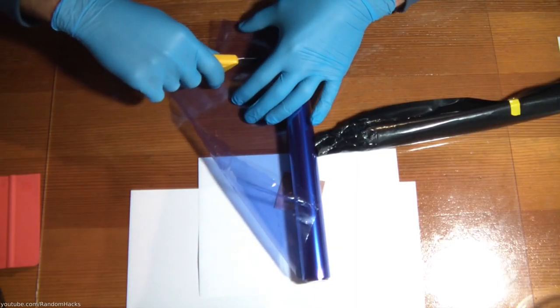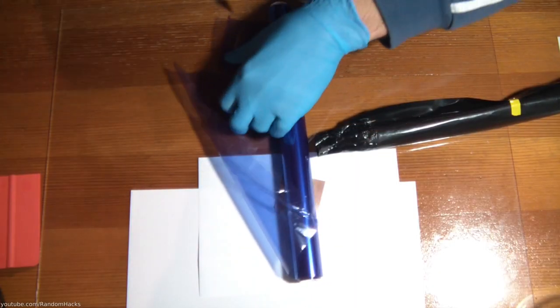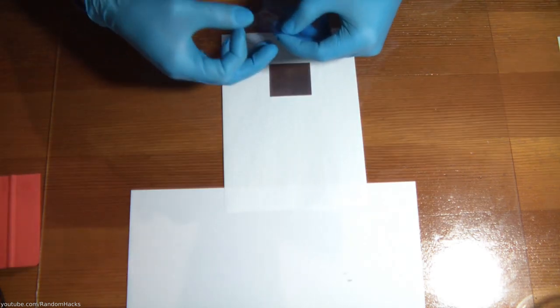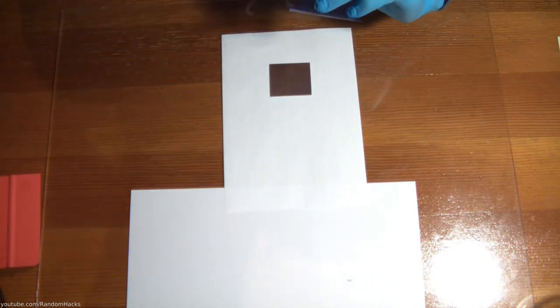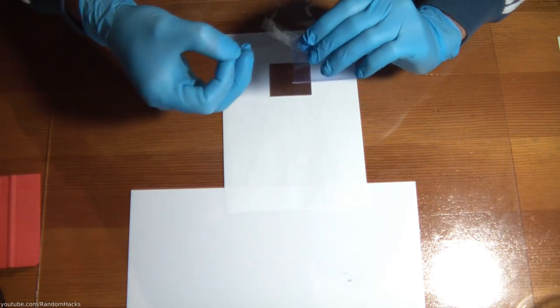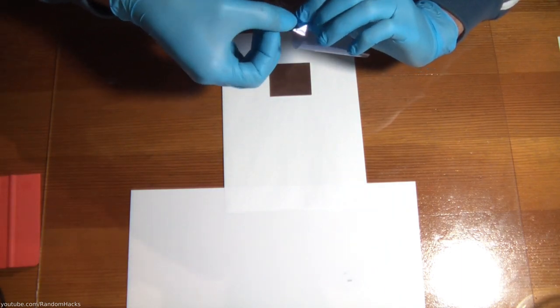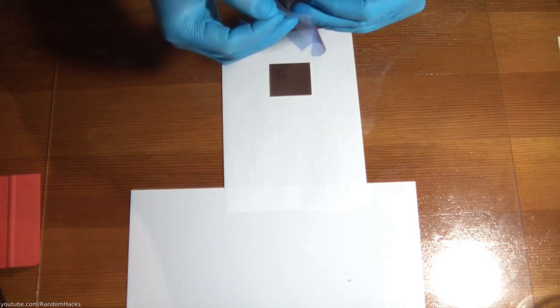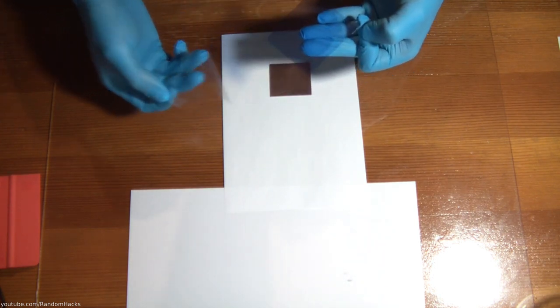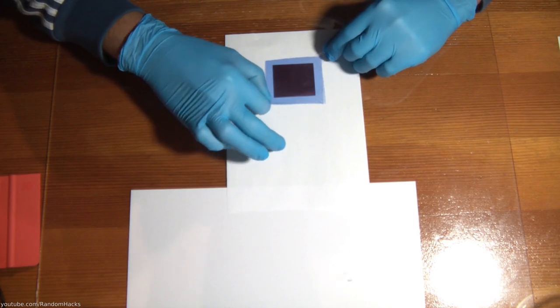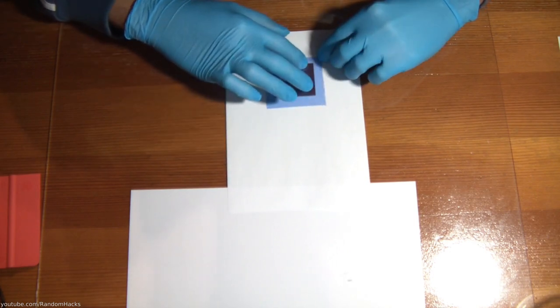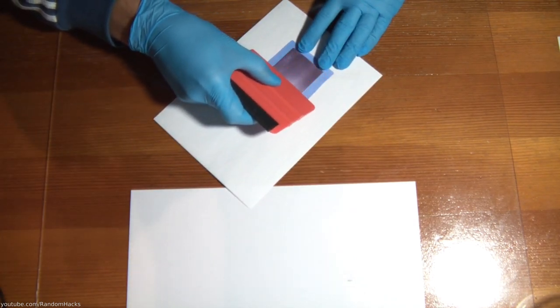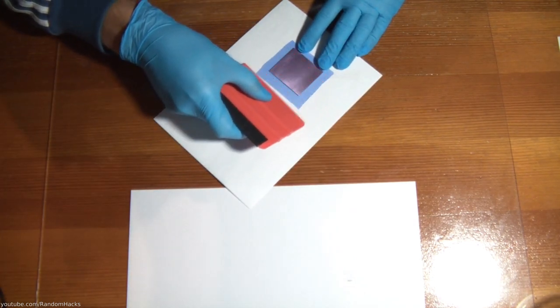I cut a piece of dry film slightly larger than the board, you can use a box cutter or scissors. I removed the back protective film with the help of two pieces of tape that I pulled apart. I then applied the dry film to the board with a squeegee, making sure not to trap any air bubbles.